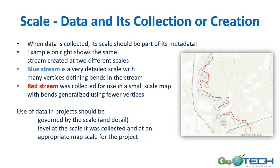Data and its collection or creation is also important for understanding what scale can do. When data is collected, the scale should be documented as part of its metadata. The example shown here illustrates a stream created at two different scales. The blue stream is very detailed, with lots of vertices showing all the different bends of the river. The red stream was collected for use in a small scale map and its bends are generalized with many fewer vertices. Use of data for projects should be aware of both the scale at which it was created and what is appropriate for the project.